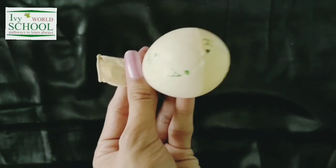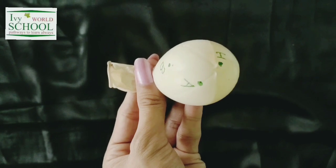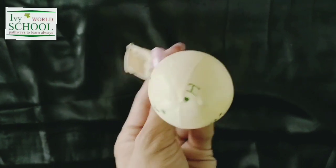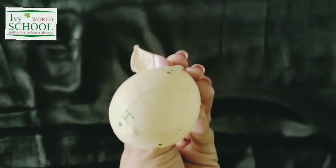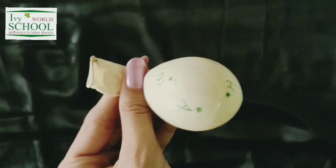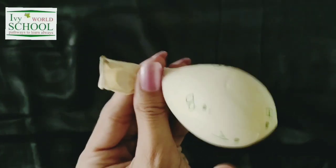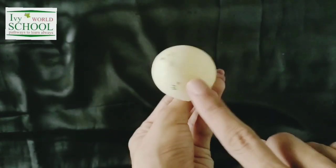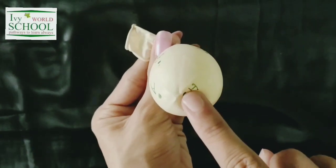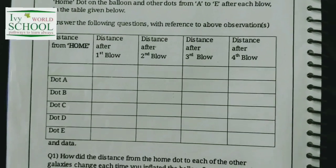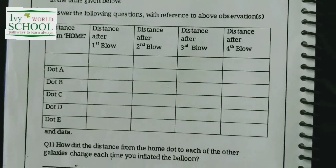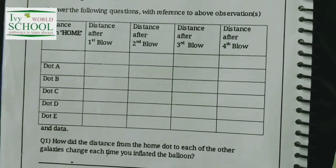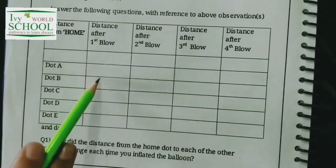We will be blowing air into the balloon, and after every blow we are going to measure the distance of the galaxies A, B, C, D, and E from H. After measuring the distance using a scale, we will note down the observations in this table.